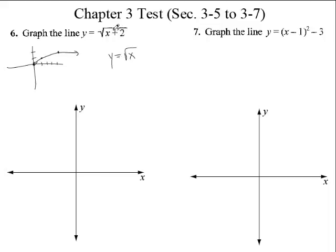What is the plus 2? It's a plus 2. What does the plus 2 do to this? It moves it to the left two places. So instead of starting at the origin, I'm going to move it to the left two places. It's not going to hit the origin this time — it's going to hit at negative 2, 0. You go to the right one place, you go up 1. You go to the right four places, you go up 2.